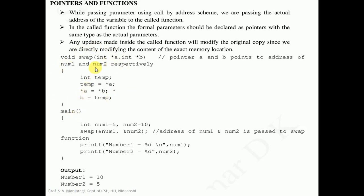Inside the main function this swap will be called. Inside the main function the very first line is variable declaration. Here we declare two integer type variables, num1 equal to 5 and num2 equal to 10. After that there is a function call. The swap function that we defined has been called from the main function. The actual parameters are num1 and num2. In this case we need to pass the address of variables num1 and num2 because in the function definition we have taken formal parameters of pointer variables a and b, which are storing the address of another variable.